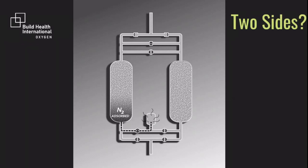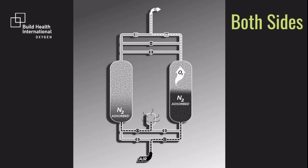Of course, there are two tanks in the PSA plant. So what is the tank on the other side doing? Well, it's doing the exact same thing, but at the opposite time. While the left-hand tank was exhausting nitrogen, the right-hand tank is producing oxygen. Likewise, when the left-hand tank produces oxygen, the right-hand tank is exhausting nitrogen.